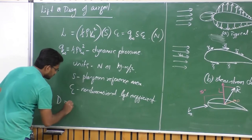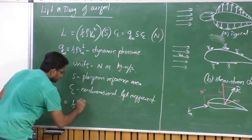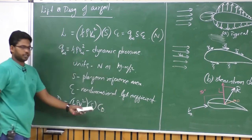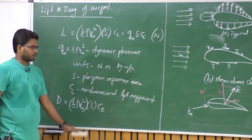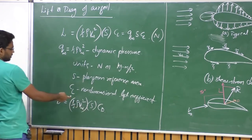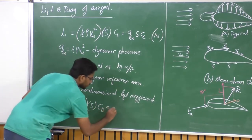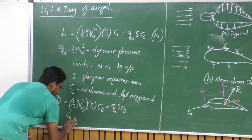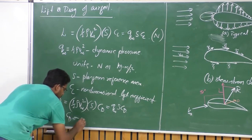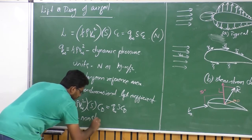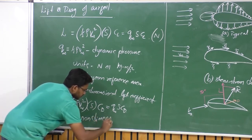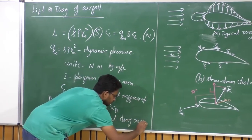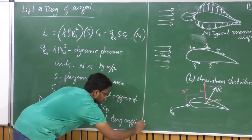Similarly, drag is defined as half rho V squared — dynamic pressure — times the reference area times CD. CD is the non-dimensional drag coefficient. So drag equals Q infinity times S times CD, where CD is the non-dimensional drag coefficient.